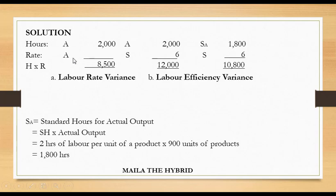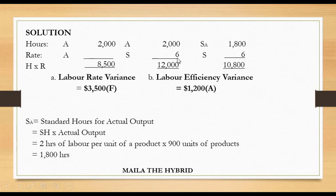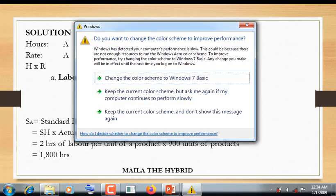The labor rate variance is the difference between actual rate and standard rate at the same actual hours. Subtracting $12,000 minus $8,500, you obtain $3,500. Since $12,000 exceeds $8,500 using the same 2,000 hours, the standard rate is higher than the actual rate. We expected to pay labor at $6, but we ended up paying less than $6 — that's favorable, less cost. So the variance is $3,500 favorable.